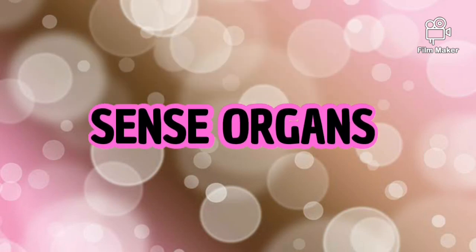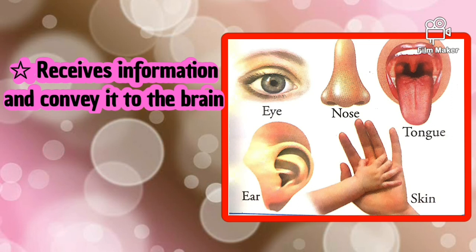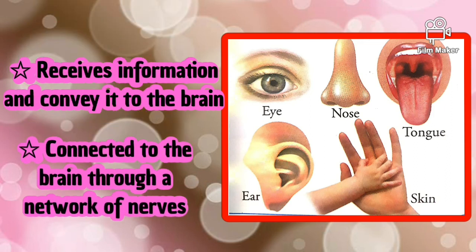We have five sense organs: eyes, ears, nose, tongue, and skin. These sense organs receive information and convey it to the brain. The sense organs are connected to the brain through a network of nerves. Whatever we feel, see, hear, or taste is received through our sense organs and that information is transferred to the brain through the nerves.